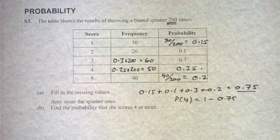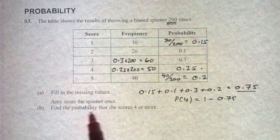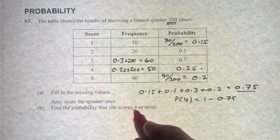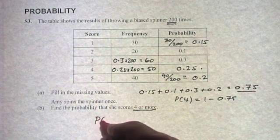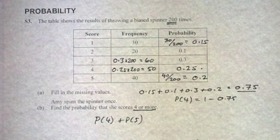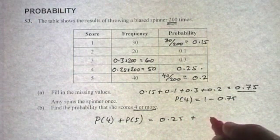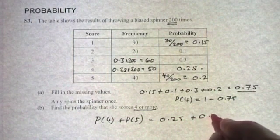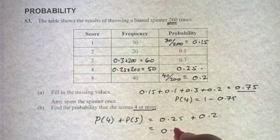Part B of the question says Amy spins the spinner once. Find the probability she scores 4 or more. It's not just 4, it's 4 or more. So that counts as probability of 4, and it could also be the probability of 5. The probability of 4 equals 0.25 added to the probability of getting a 5 is 0.2, so the total there is going to be 0.45.